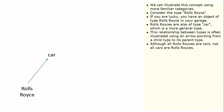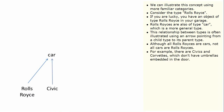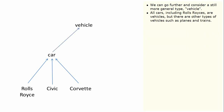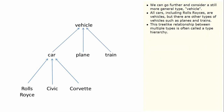Although all Rolls-Royces are cars, not all cars are Rolls-Royces. For example, there are Civics and Corvettes, which don't have umbrellas embedded in the door. We can go further and consider a still more general type, vehicle. All cars, including Rolls-Royces, are vehicles, but there are other types of vehicles such as planes and trains. This tree-like relationship between multiple types is often called a type hierarchy.